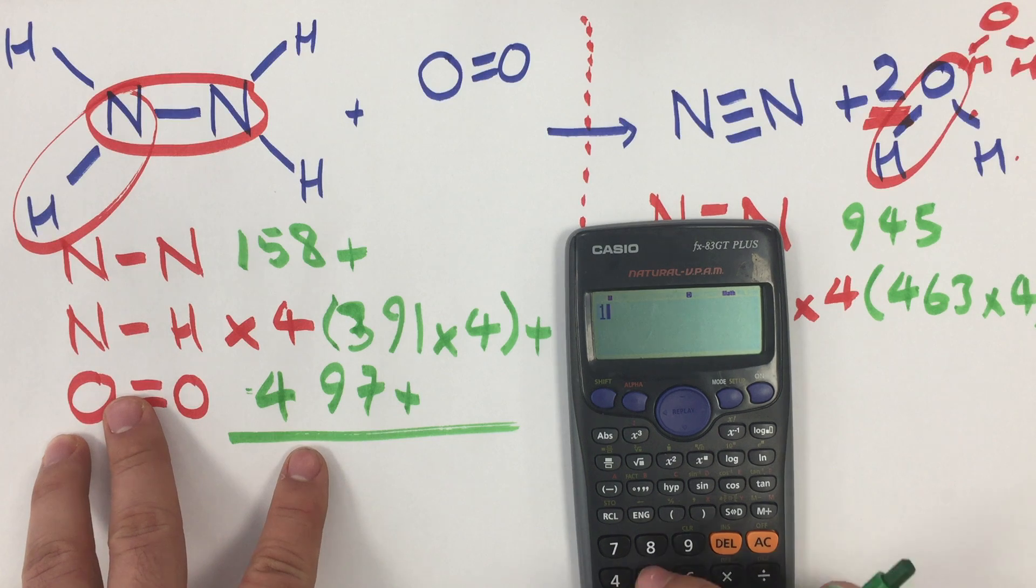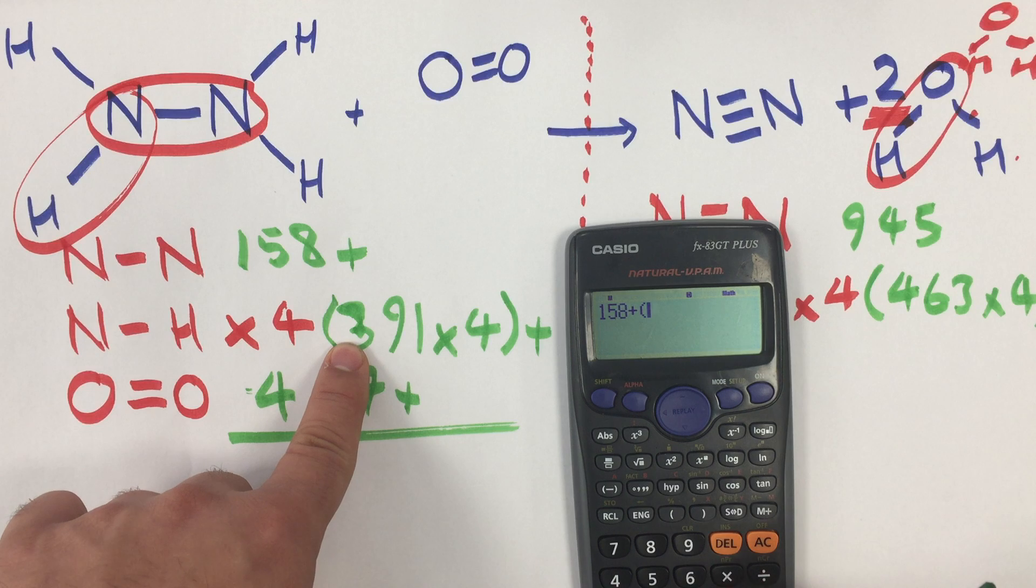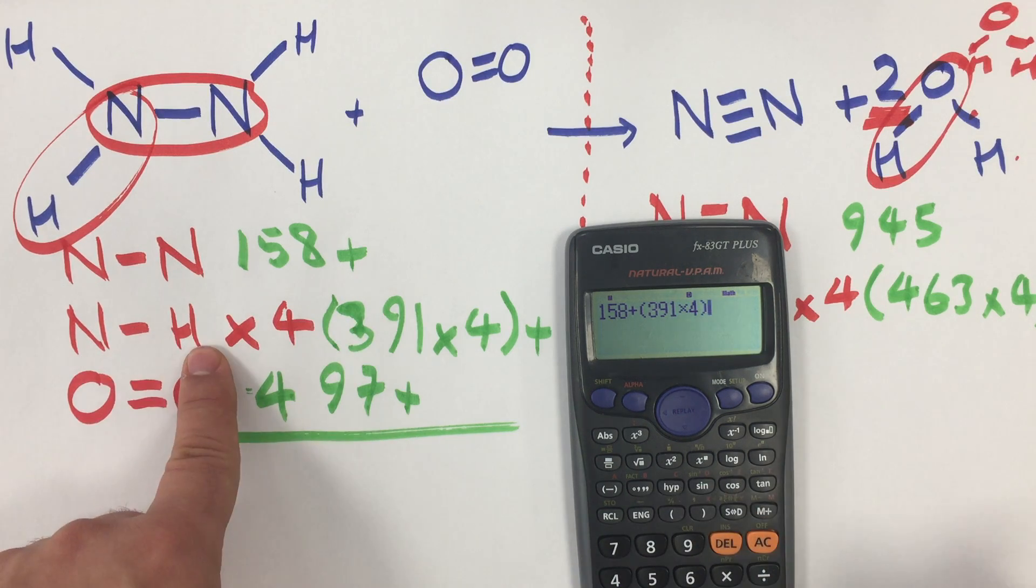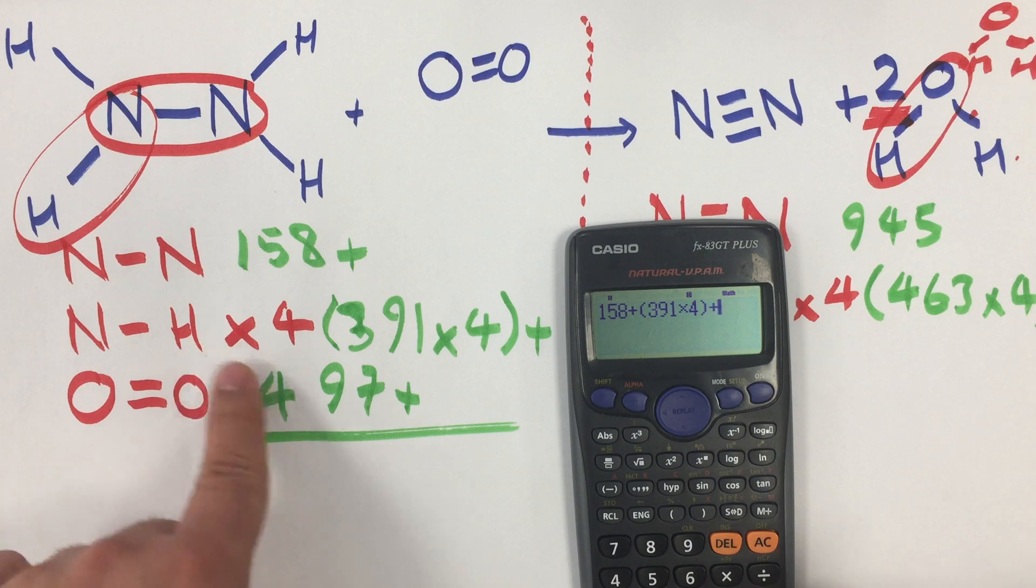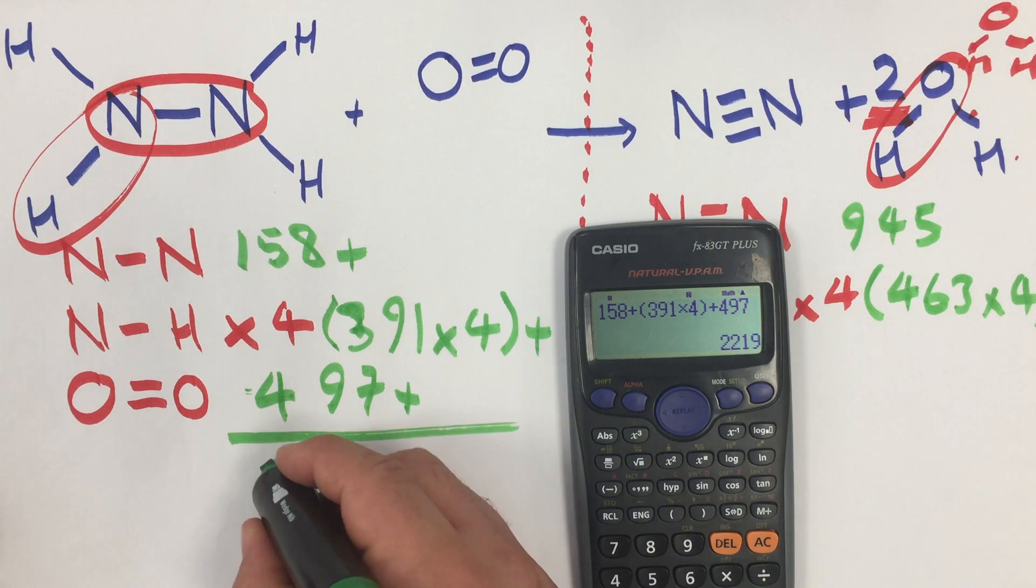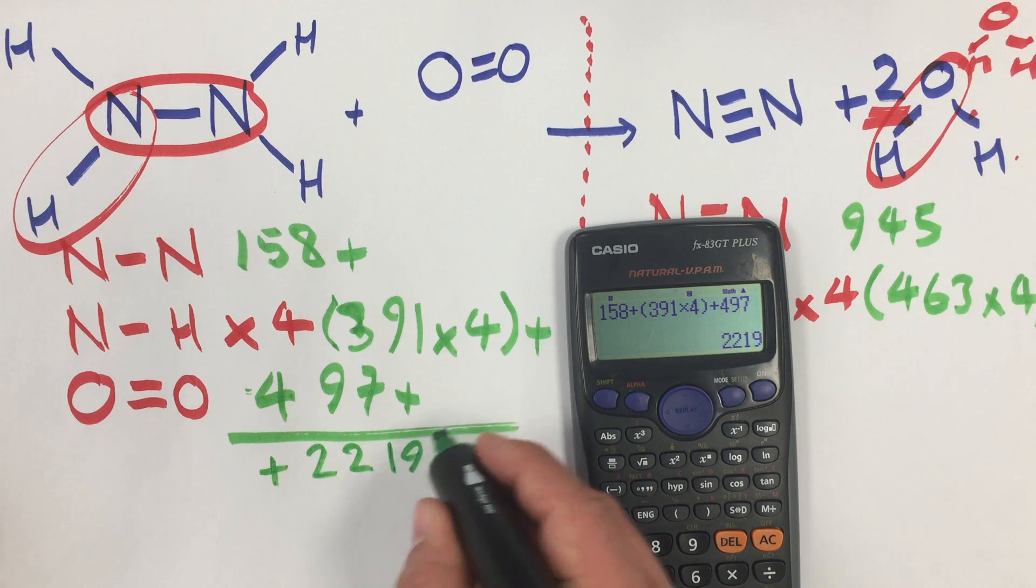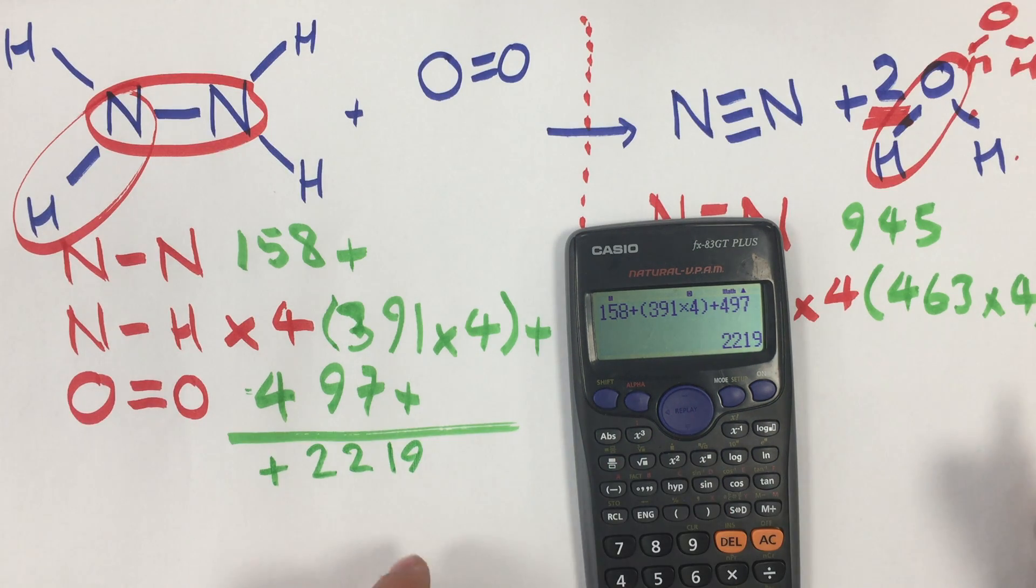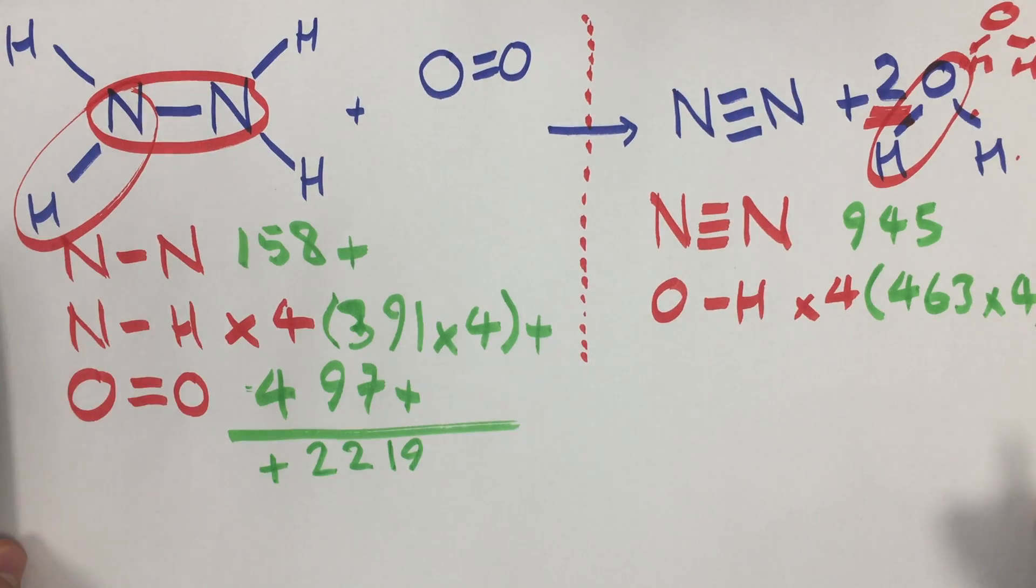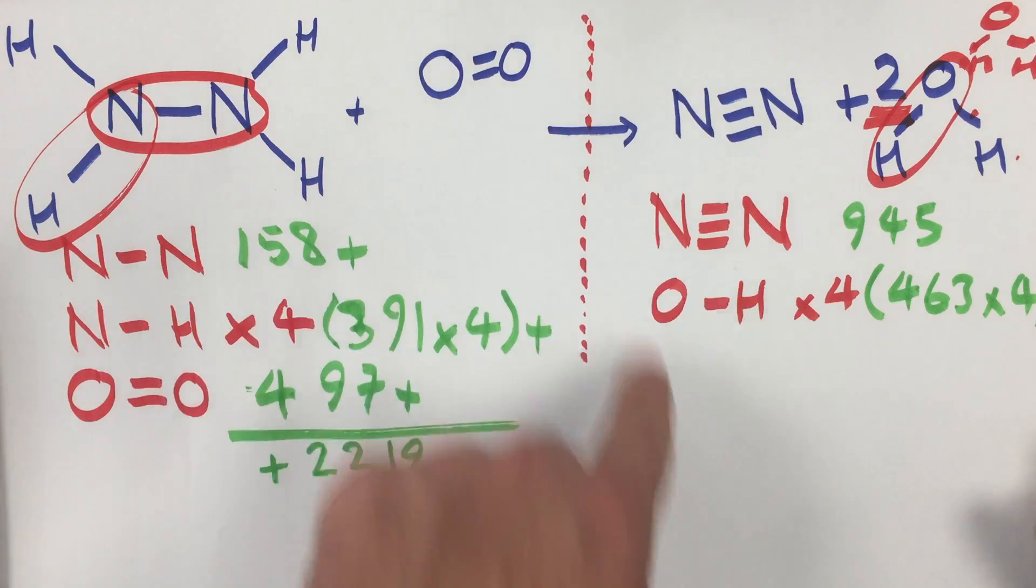So then on your calculator you add these up. So first of all I'm going to do the endothermic side. So I have 156 plus 391, but I have four nitrogen-hydrogen bonds, plus an oxygen double bond which is 497. And so that gives me overall plus 2,219 as the total amount of energy on the left hand side required to break all of these bonds.